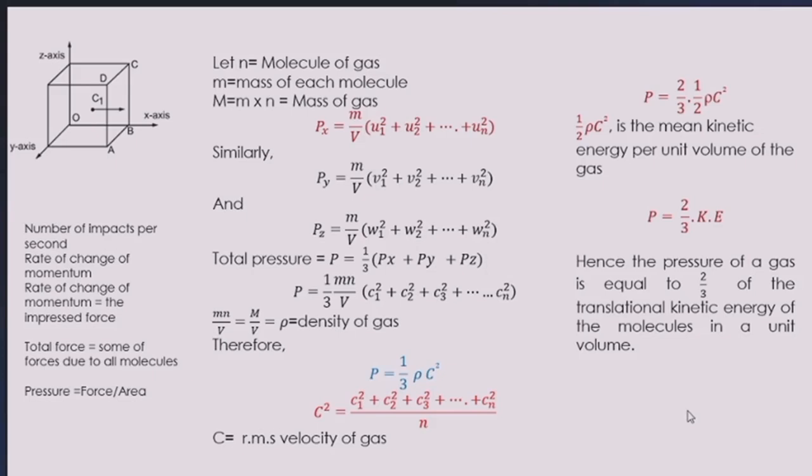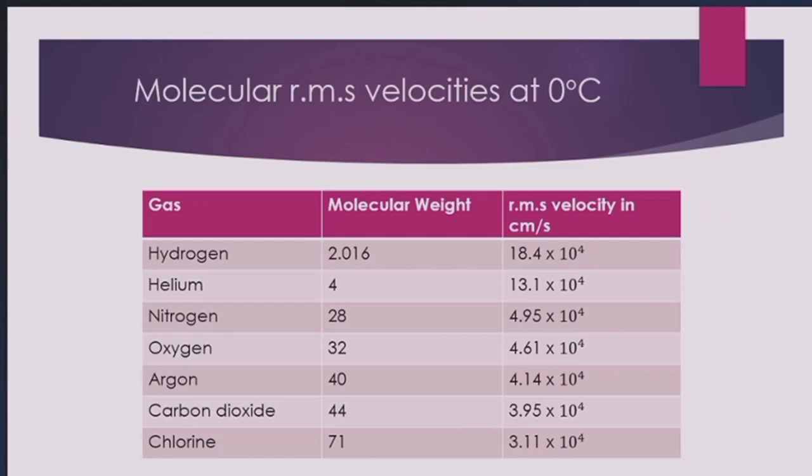Now let us find out the RMS velocities of different gases. With the help of that expression we can find out the RMS velocity. So we can see that hydrogen whose molecular weight is 2.016 has RMS velocity of 18.4 into 10 raised to the power 4. For helium the molecular weight is 4, the RMS velocity is slightly less. And as we go on from hydrogen to chlorine, the molecular weight is increasing and the RMS velocity of the molecule is decreasing. So in this way by using the formula we can find out the RMS velocity which depends on the molecular weight of the gas molecules.